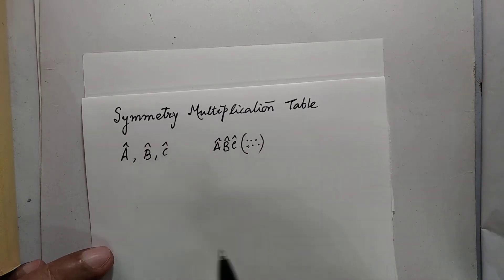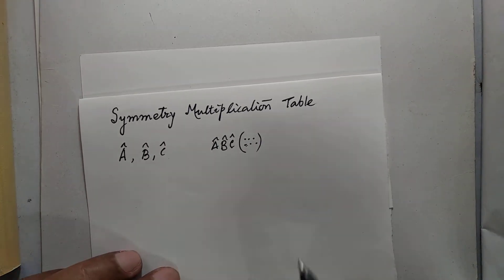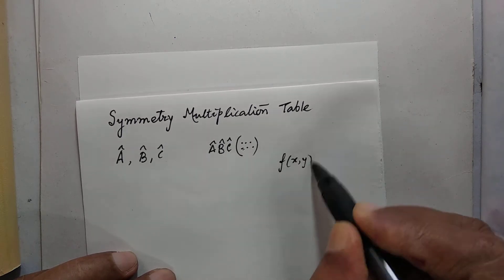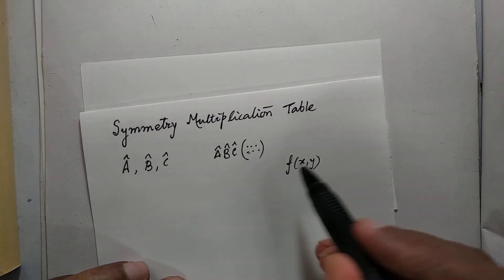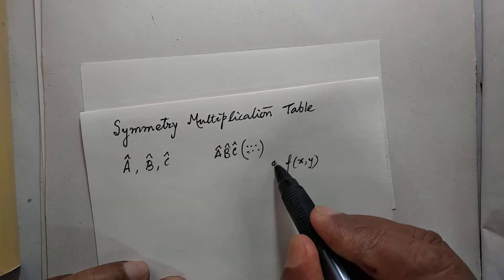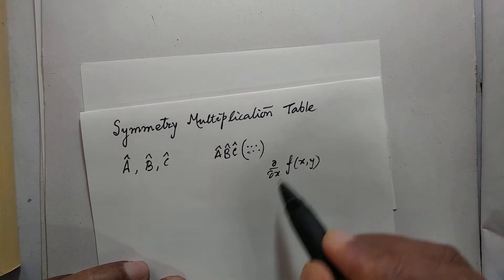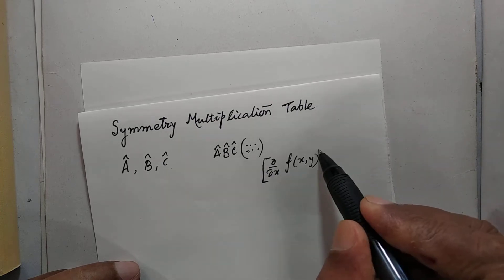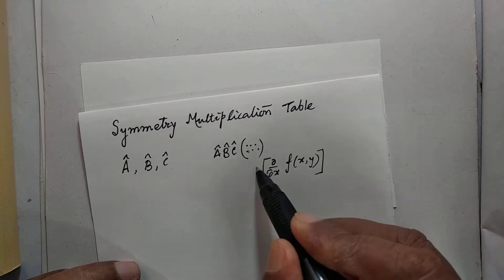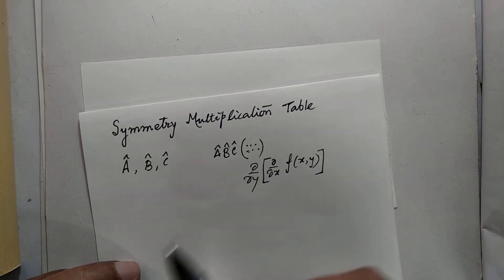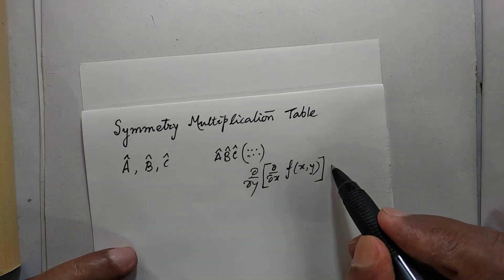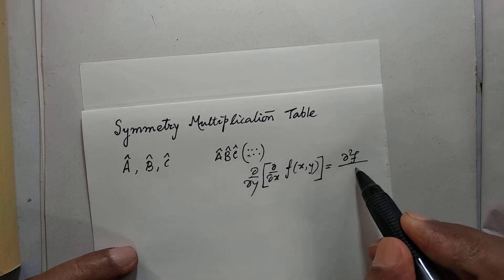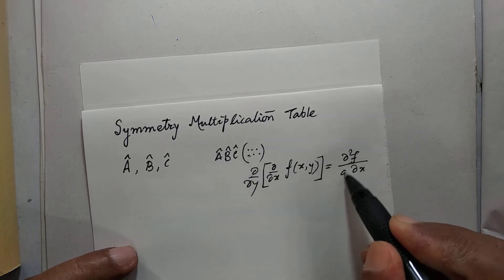This is the usual practice in mathematics. For example, if you have a function f(x, y), you can operate ∂/∂x on this — a partial derivative — and on the result, operate ∂/∂y. This is denoted by ∂²f/∂x∂y.